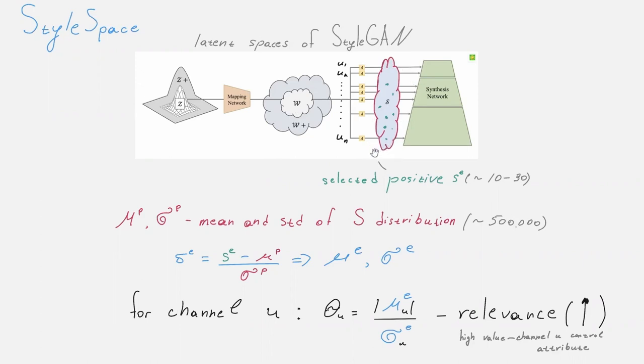Style space-based approach typically requires only from 10 to 30 positive examples. This is an important advantage since for many attributes negative examples can be highly varied. Style space-based approach utilizes the idea that the difference between the mean style vector of the 30 positive examples and that of the entire generated distribution reveal which style space channels are the most relevant for the target attribute. You can change its activation by varying the value in the corresponding style space dimension by a certain amount, so that the generated image gets the desired attribute.